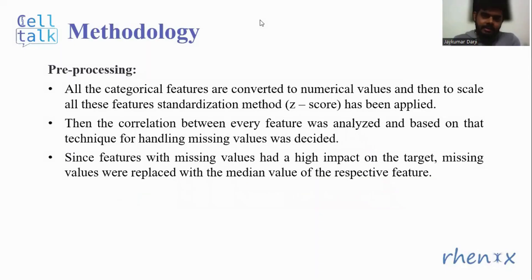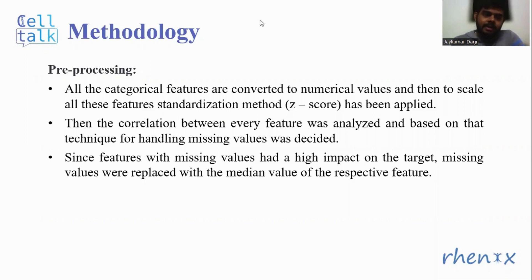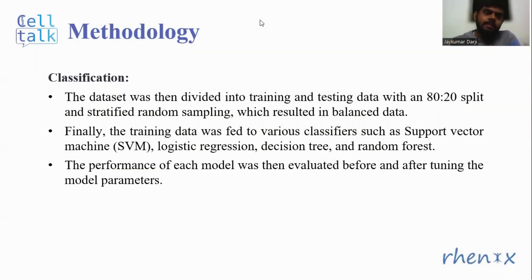These are the features used for model development. In the pre-processing step, all the categorical features are converted to numerical values. Then, to scale all these features, standardization methods using z-score have been applied. The correlation between every feature was analyzed, and based on that, the technique for handling missing values was decided. Since features with missing values had a high impact on the target, missing values were replaced with the median value of their respective features. The dataset was divided into training and testing data with an 80-20 split, and stratified random sampling was used, which resulted in a balanced dataset.